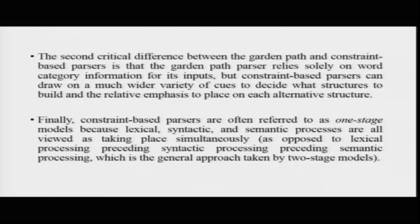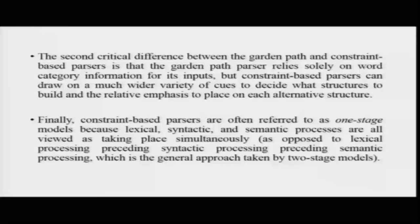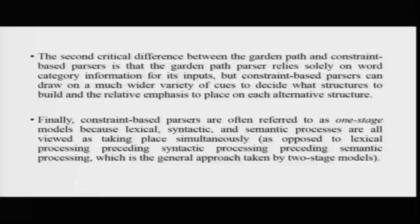Another critical difference is that the garden path parser relies solely on word category information — the lexical processor tells you this is a conjunction, a noun, a verb, a determiner, and so on. Constraint-based parsers, however, can draw on a much wider variety of cues. They take not only word category information into account, but all sorts of other information as well, and it is on the basis of the summation of all this information that one decides which structures to build.